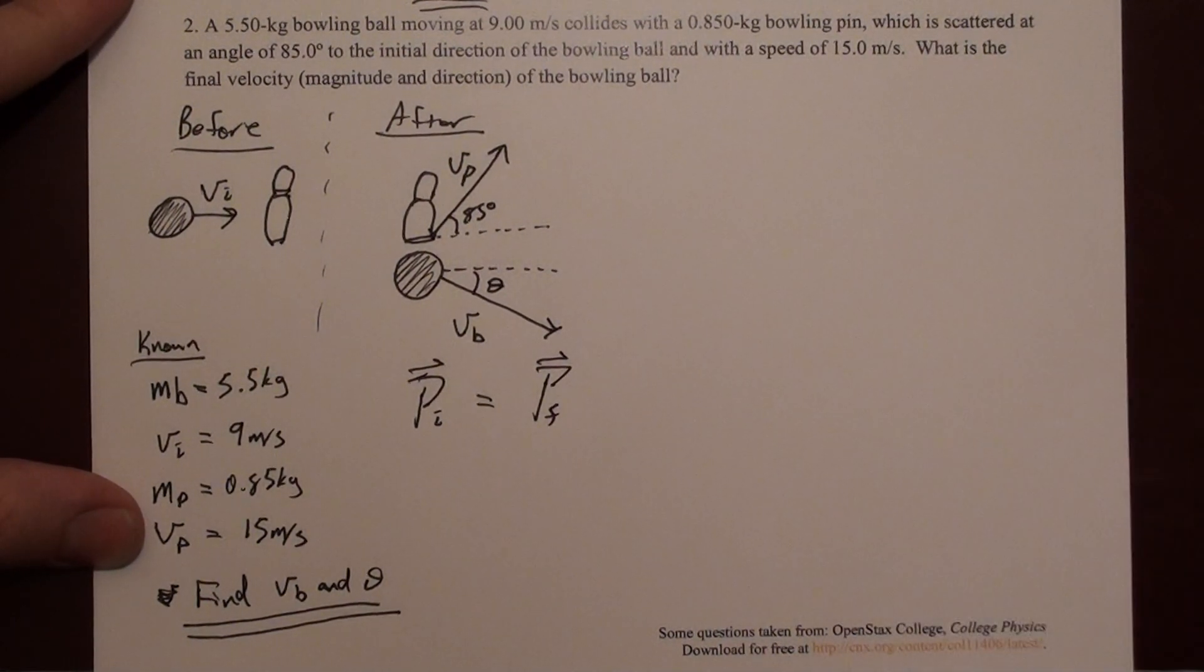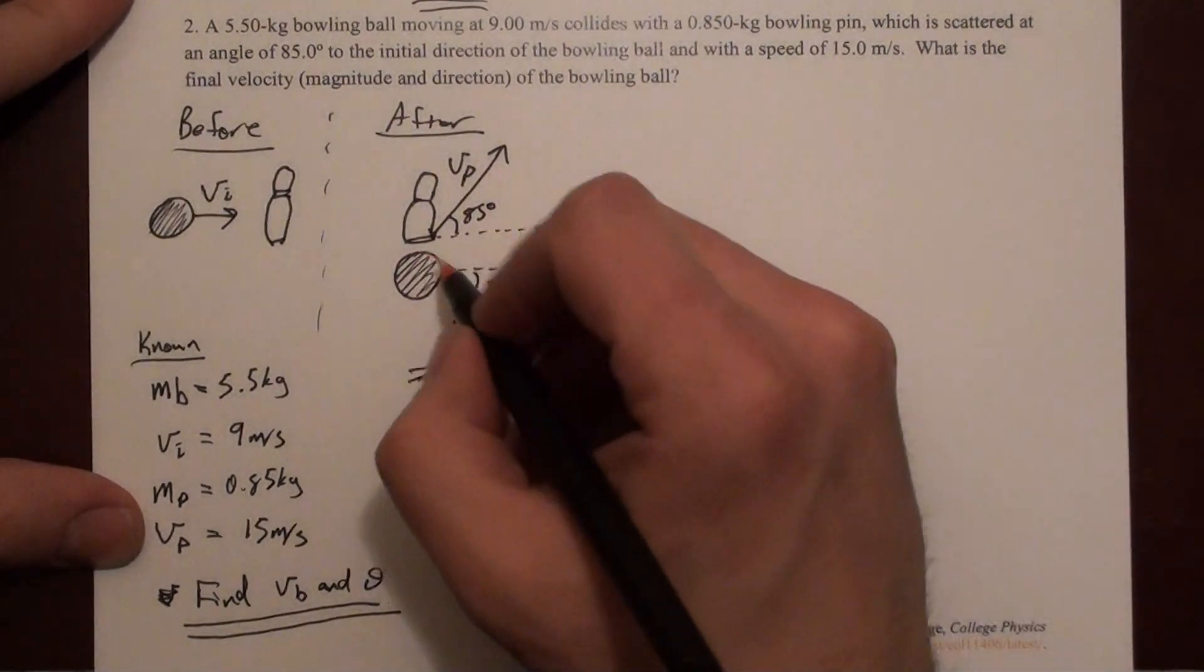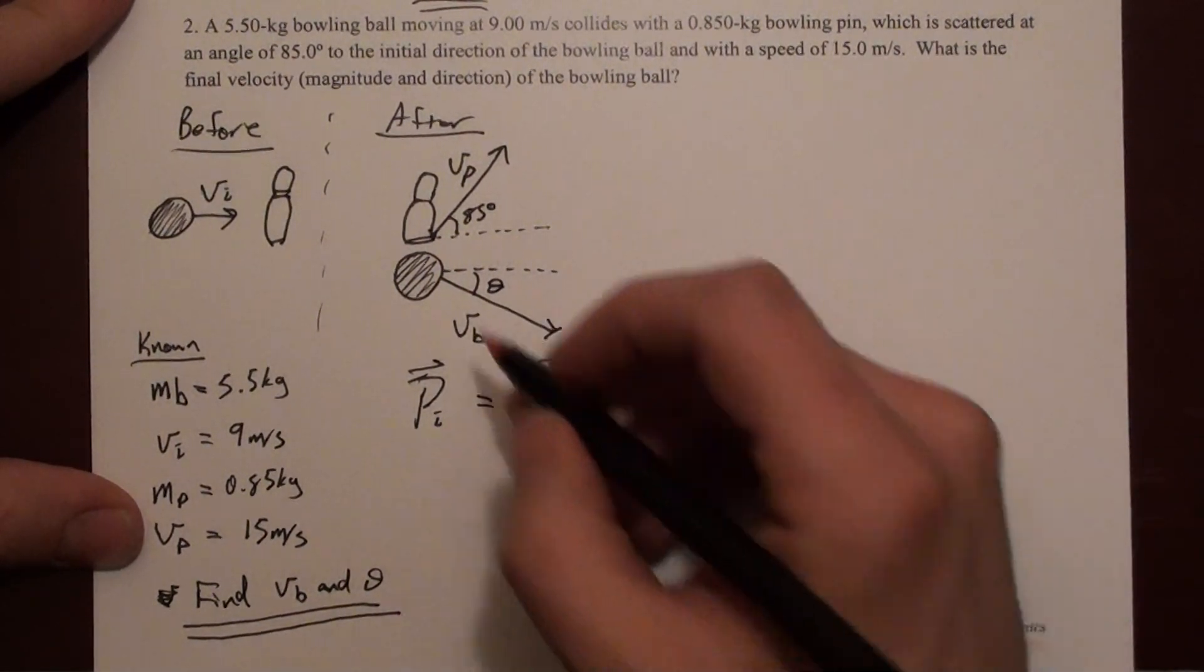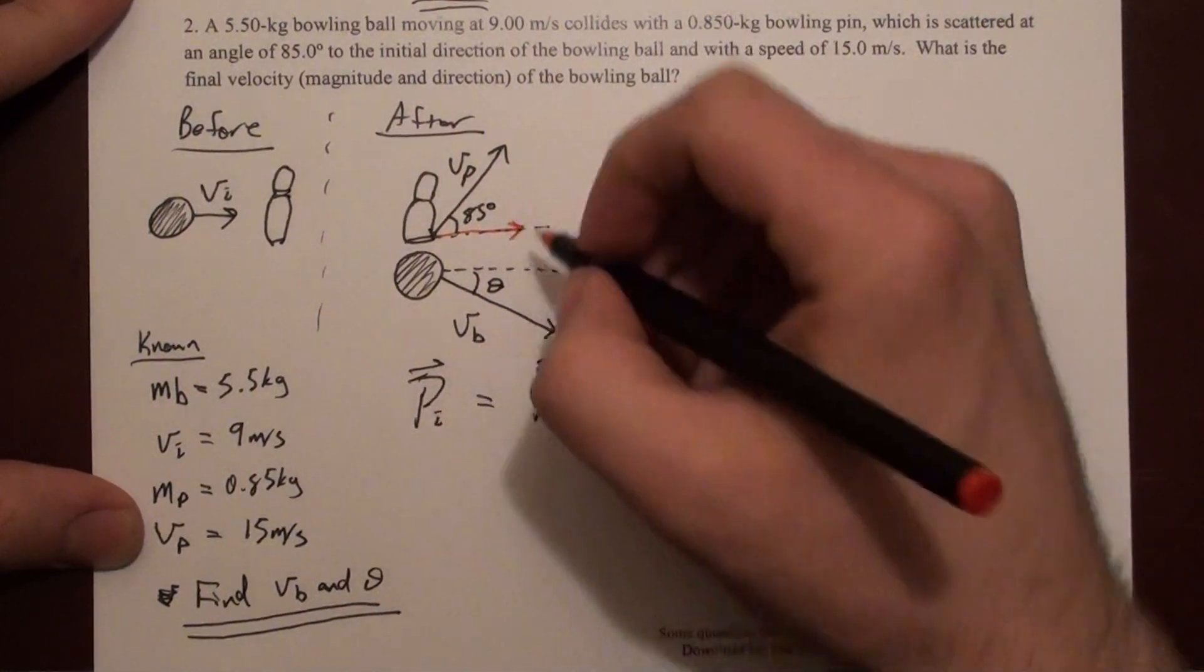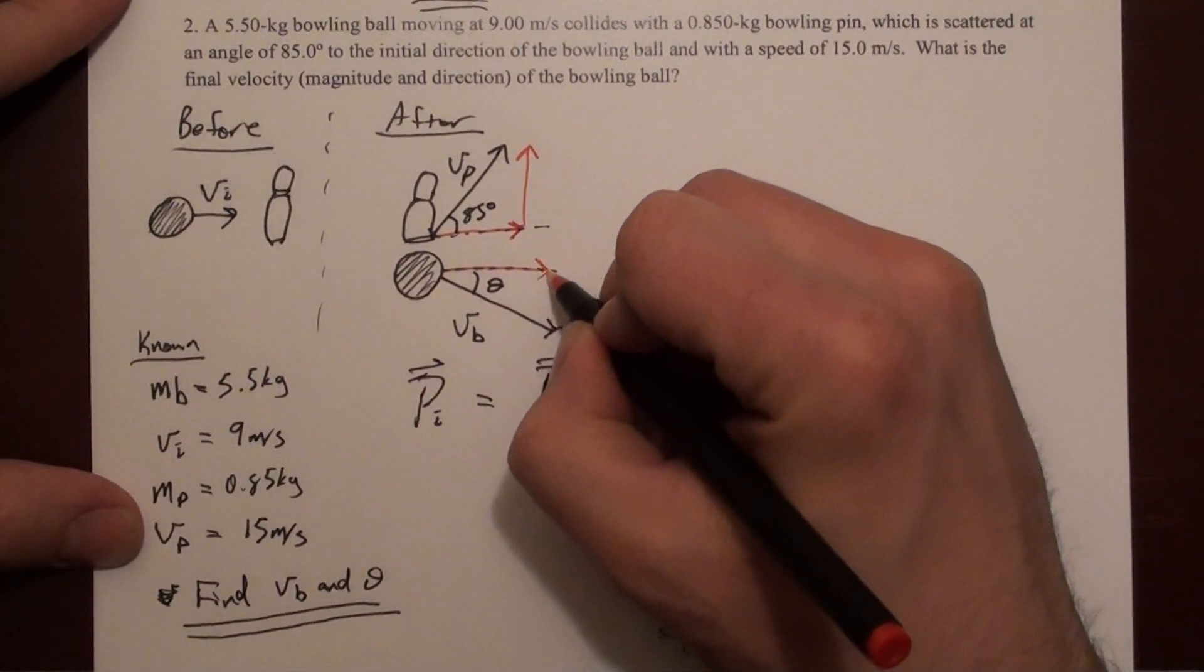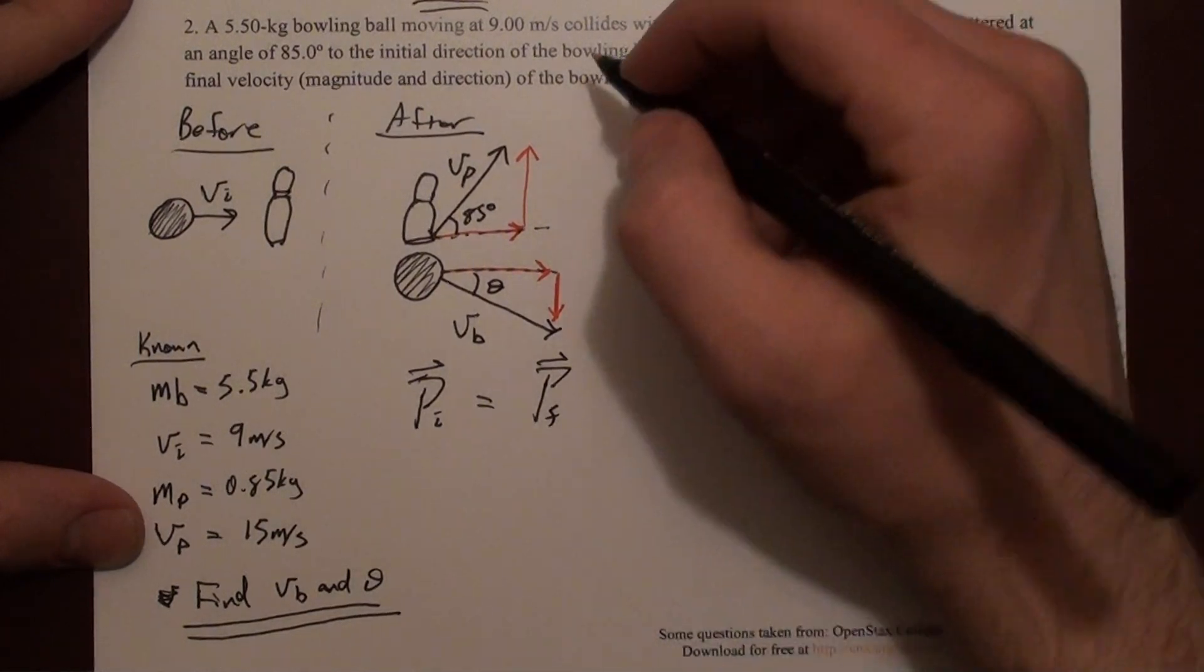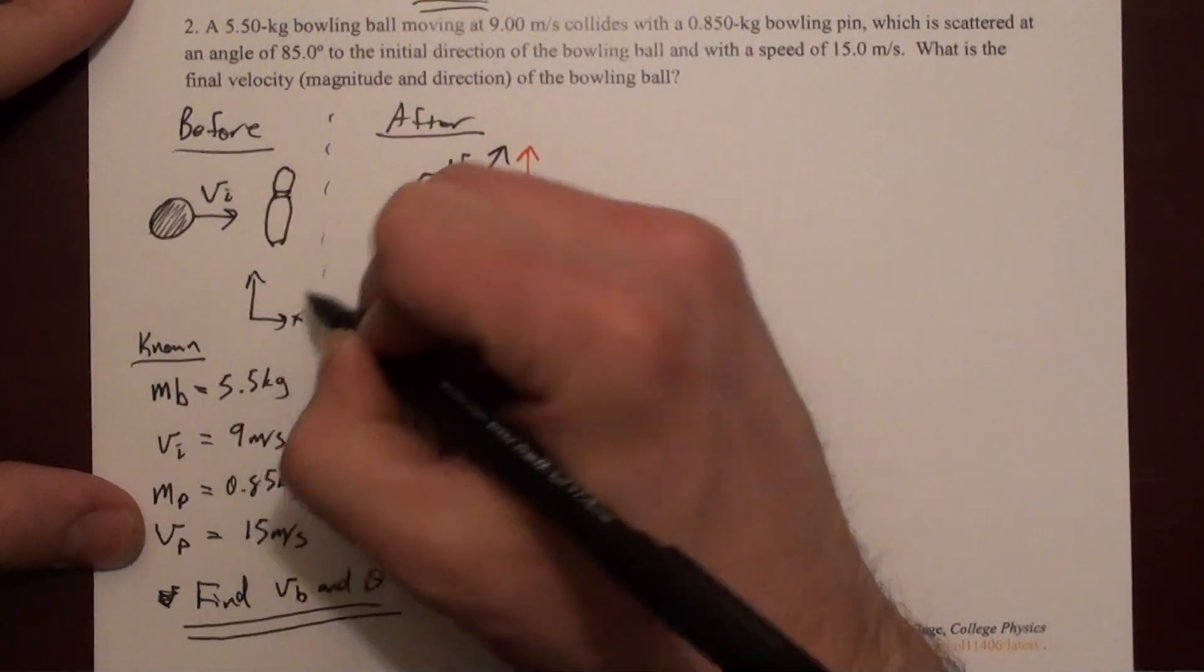I'm going to break the velocity in this case into x and y components. Then all I have to do is multiply those velocities, those components of velocities, by the mass of each object to get the momentum. So I can break this into x and y. I failed to label axes here, but you can see I'll label it right here. We're choosing what we typically do.